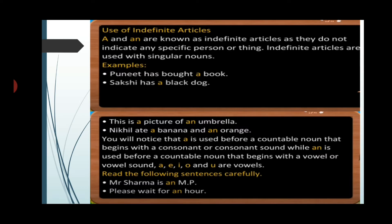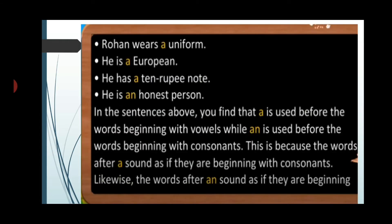Now read the following sentences carefully. Mr. Sharma is an MP. Please wait for an hour. Here we are using an because we hear a vowel sound at the start. Rohan wears a uniform. He is a European. He has a 10 rupee note. He is an honest man. In these sentences, a is used before words that begin with a vowel letter but sound like a consonant, while an is used before words beginning with a consonant letter but producing a vowel sound.